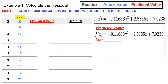Let's take a look at Example 1. We want to calculate the residual. Step one is to calculate the predicted values by substituting the given values of x into the given equation. The function f(x) equals negative 0.11688x squared and so forth. We take our x values — the numbers one through nine — and plug them in to get the predicted value.